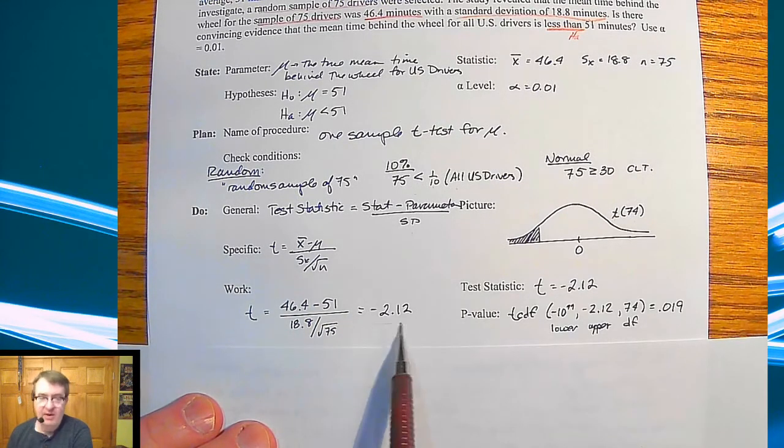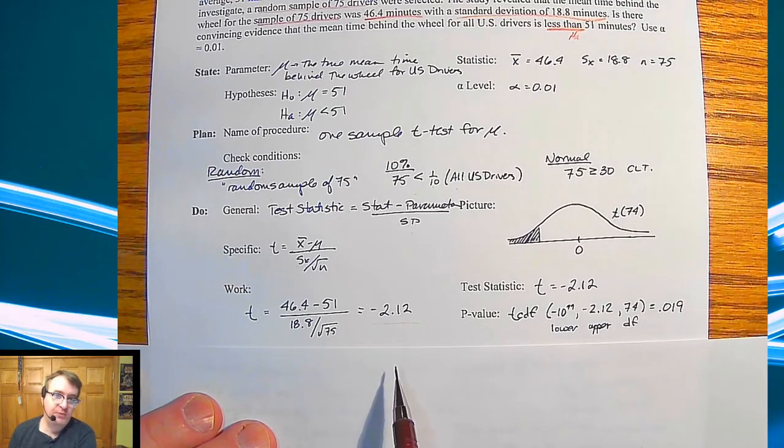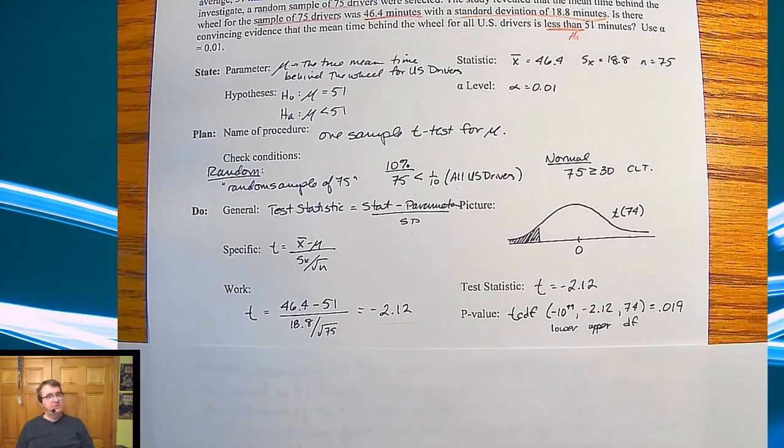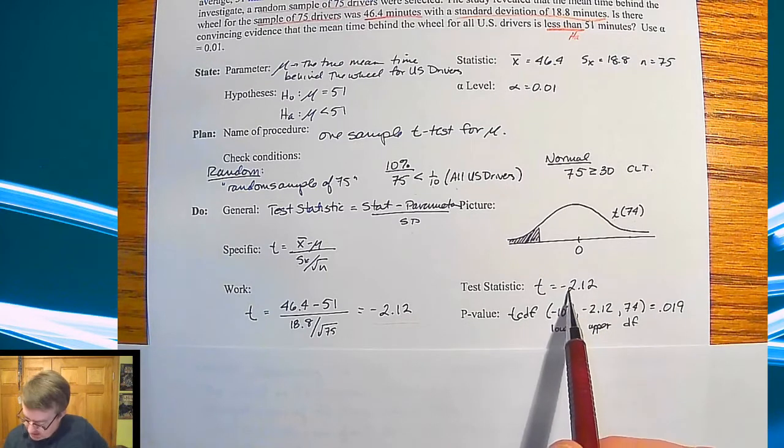When I plug everything in and get out, I get a negative 2.12. So again, in my head, I'm going to say, this is going to be pretty close. Remember, anything over two generally is kind of in our significance wheelhouse. So if I check over here, I get negative 2.12.